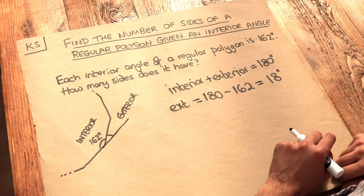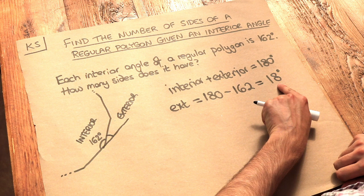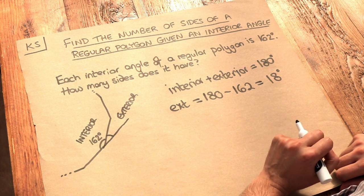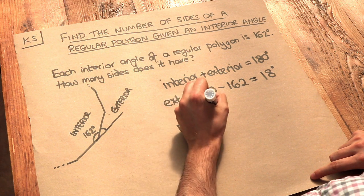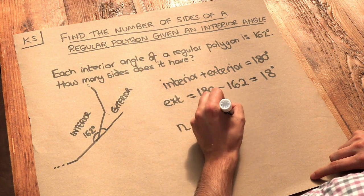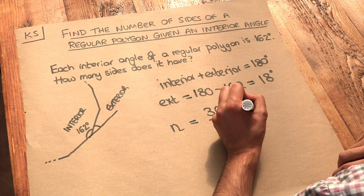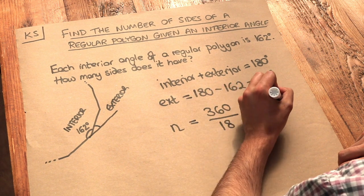Now in a previous video we saw if we had the exterior angle of a regular polygon we could find how many sides it was. And the way we do that is we just do 360 divided by that exterior angle. And if you do that, that's going to give you 20 sides, which is the answer.